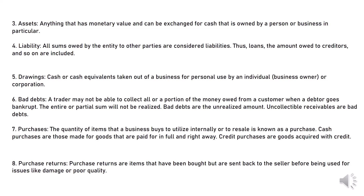7. Purchases: The quantity of items that a business buys to utilize internally or to resell is known as a purchase. Cash purchases are those made for goods that are paid for in full and right away. Credit purchases are goods acquired with credit. 8. Purchase returns: Purchase returns are items that have been bought but are sent back to the seller before being used, for issues like damage or poor quality.